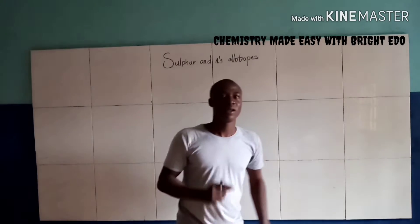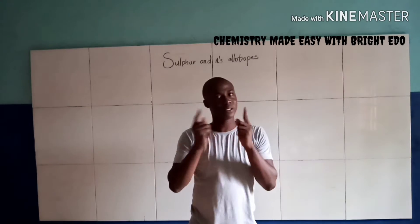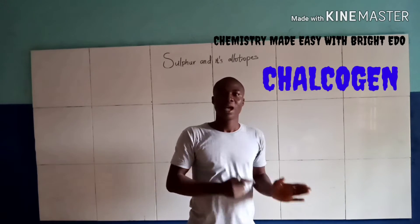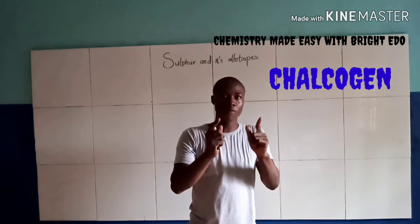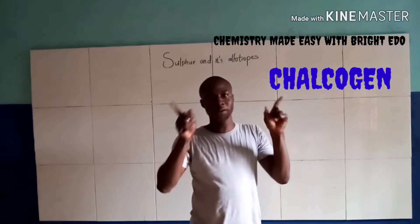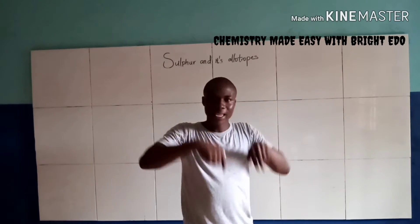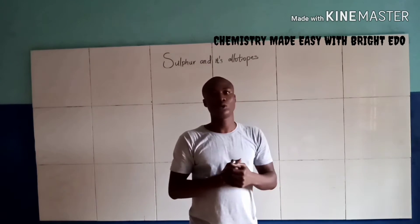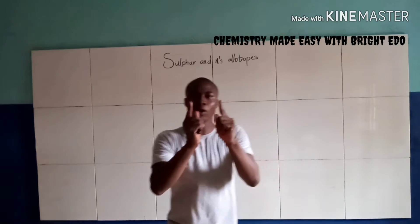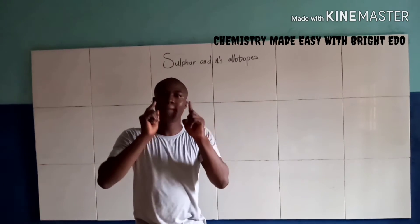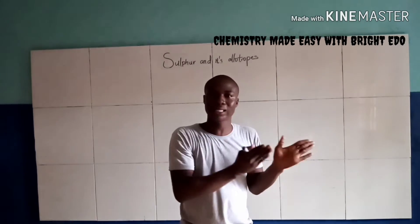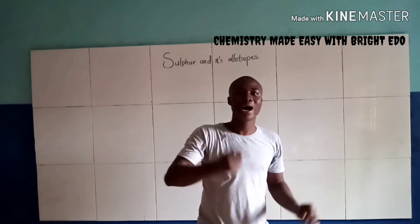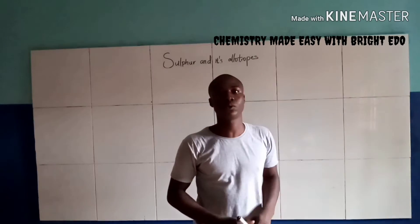Now Sulfur is a group 6 element, precisely a chalcogen. Sulfur exists in different forms in the same physical state — that's Allotropy. Now the Allotropes of Sulfur are basically classified into the crystalline and the Amorphous Allotropes.